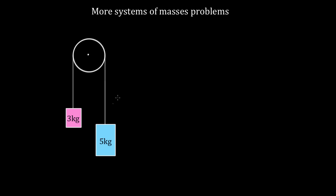The easy way to get the magnitude of the acceleration of the objects in your system — whether it's the five kilogram box or the three kilogram box — is to take the net external force that tries to make the system go and divide by the total mass of the system. This works only if the objects are required to move with the same magnitude of acceleration, and in this case, they are.